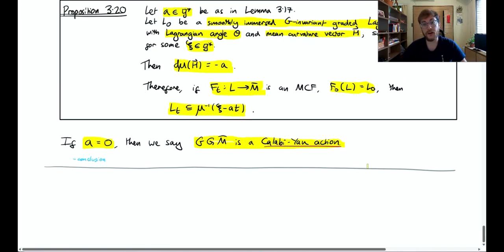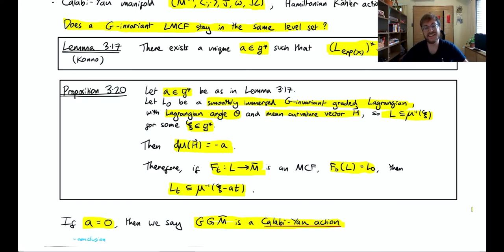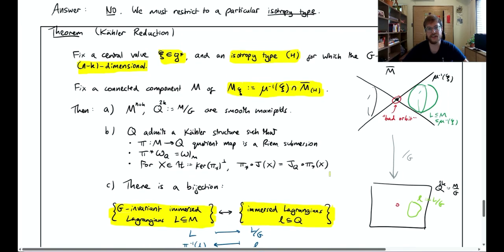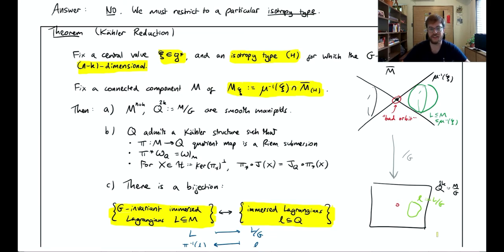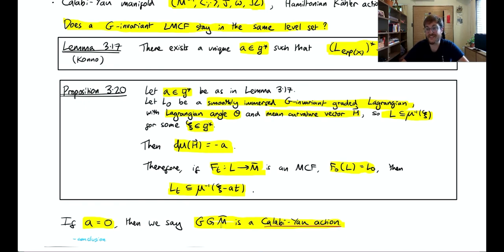That should be enough for this lecture. We've finished all the preliminaries and can now move on to the new results of myself and Jesse. We will be focusing on the cohomogeneity 1 case, where G-orbits are (N−1)-dimensional and the quotient is 2-dimensional — in a sense the most basic case where we can apply this theory to the study of Lagrangian mean curvature flow — and we focus on the Calabi-Yau action case so that we can employ the Kähler quotient. See you there, and thanks for listening.